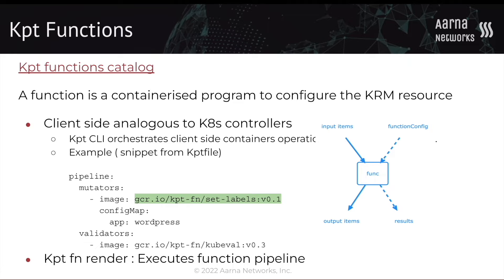This slide shows a simple example of a pipeline which consists of a mutator using a setLabel function. If we render such a function in a KPT package, it will set labels to all the KRM files in that package.